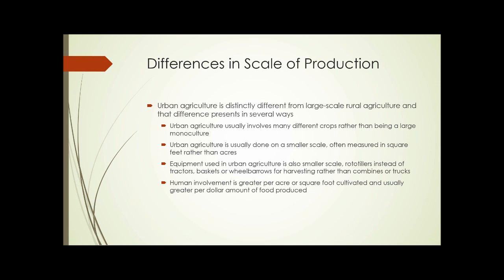So, let's talk about some differences in the scale of production. Urban agriculture is distinctly different from large-scale rural agriculture, and that difference presents in several ways. First, urban agriculture usually involves many different crops, rather than being a large monoculture.